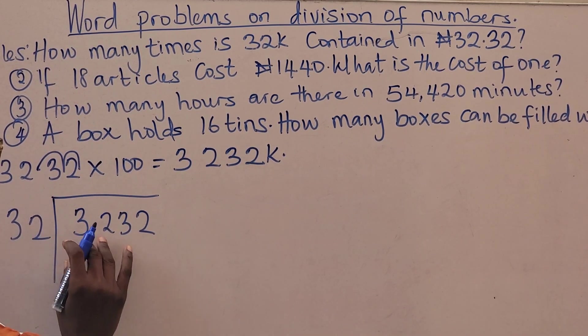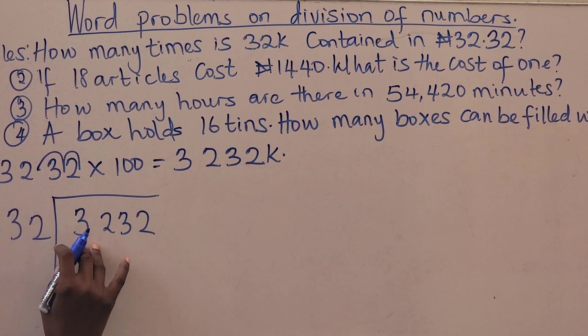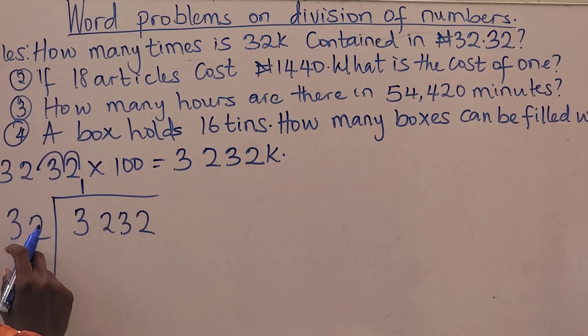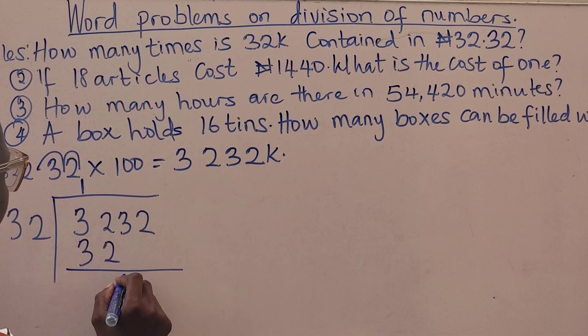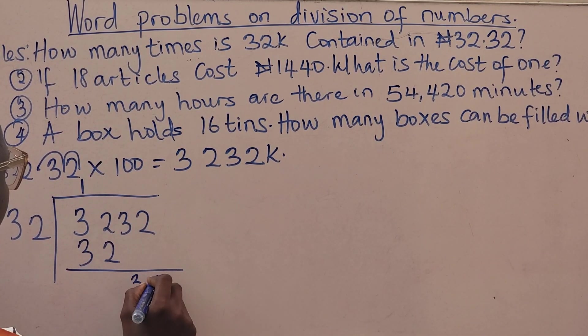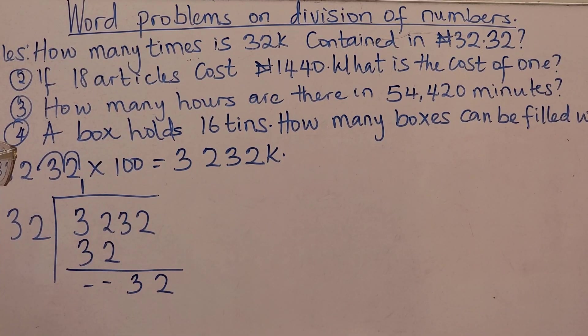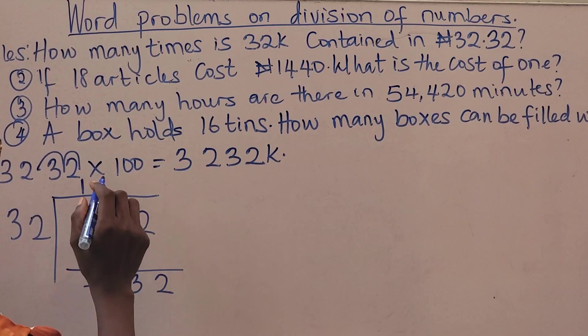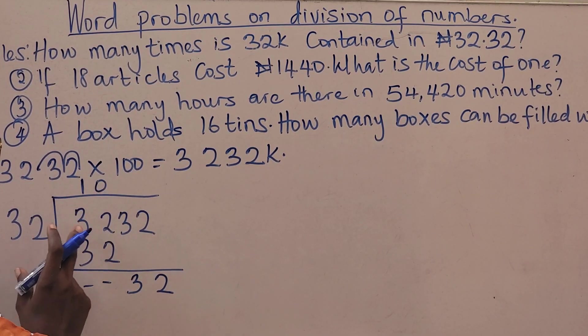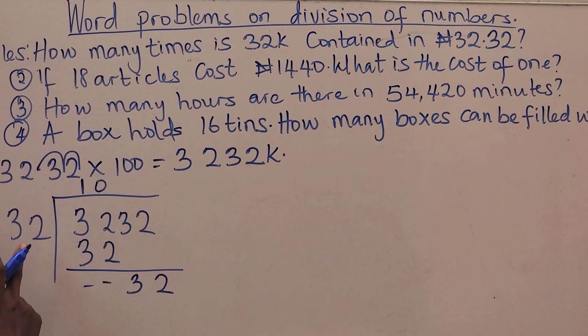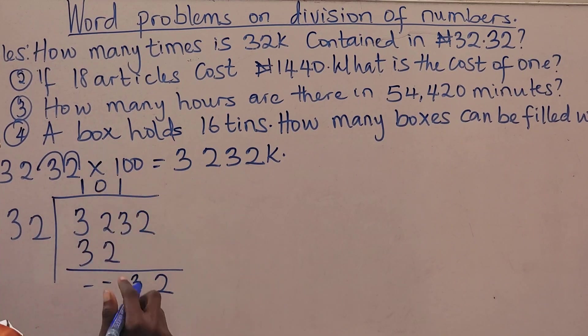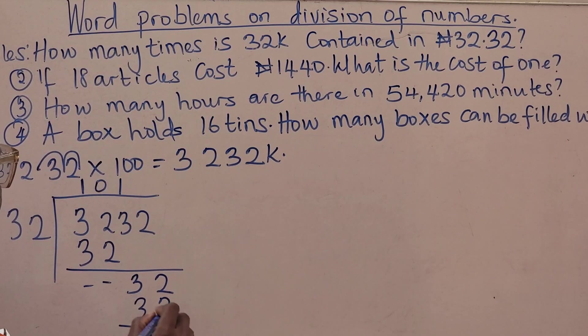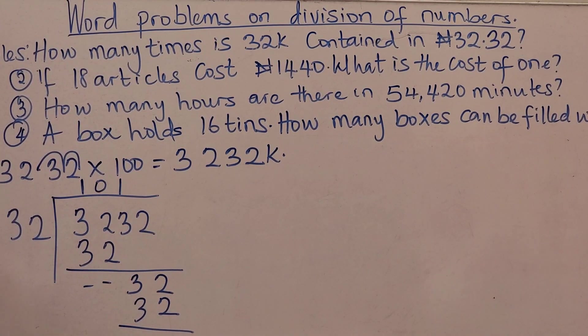We have 32, I can pick 32. 32 divided by 32, that's 1. 32 times 1, that's 32. Then I bring it down, I have 32. 32 in 3 is not possible, so you have your 0.